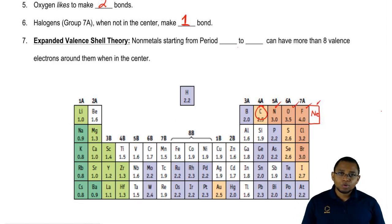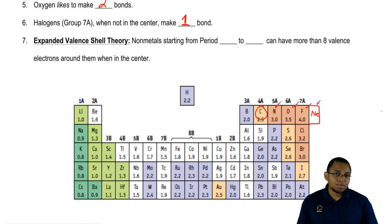Now, the last and final rule. This is called the expanded valence shell theory. We said earlier that nonmetals, when they form covalent compounds, want to follow the octet rule. The octet rule says that that central element wants eight electrons around it, eight valence electrons around it. But here's the thing. That is not always the case. We get into expanded valence shell territory.